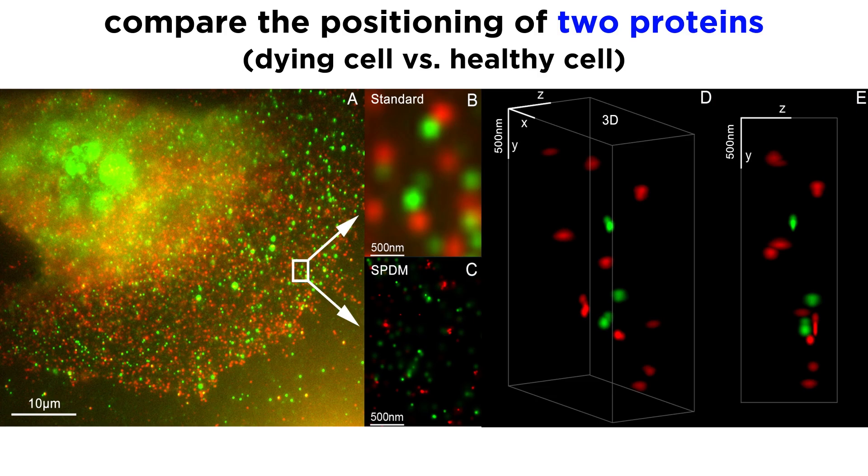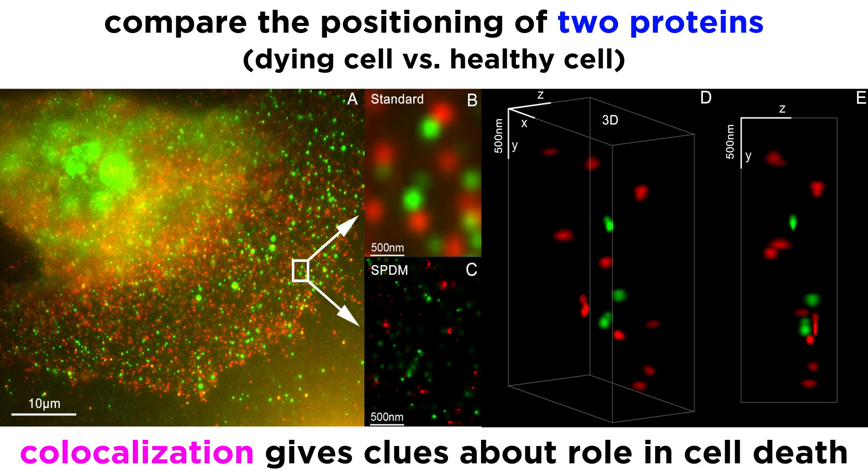For example, a researcher looking at cell death could look at the positioning of two proteins, first in a cell going through cell death, and then a healthy cell. If in the dying cell the proteins co-localize, or their fluorescent images overlap, but in the healthy cell they do not co-localize, the data suggests that these proteins interacting have the potential to play a role in cell death. Although it is important to note that these images cannot prove the interaction of proteins, but simply serve as a starting point for further research.